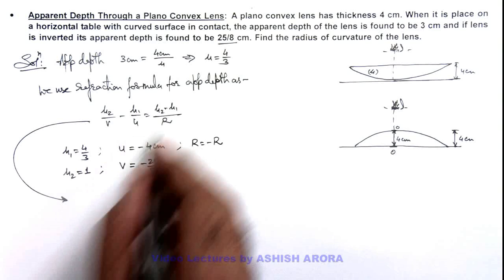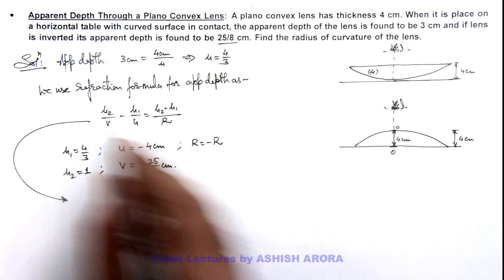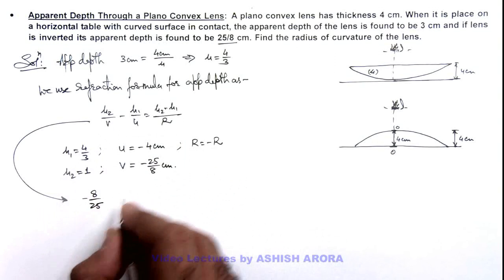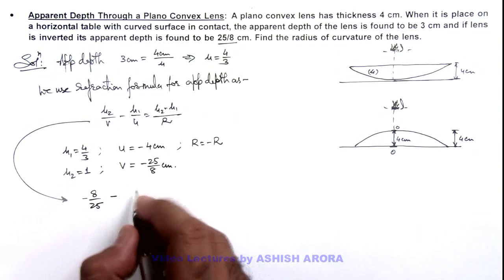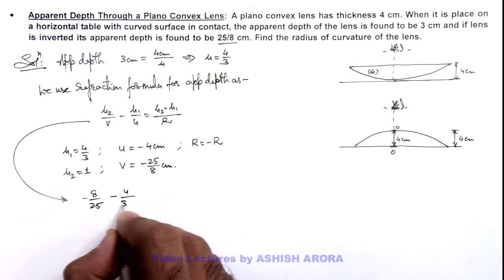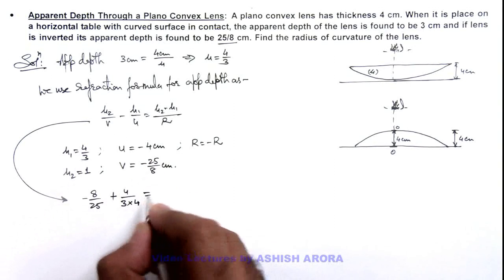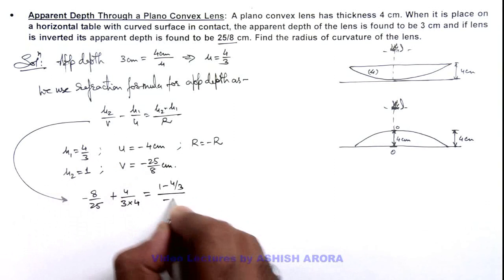On substituting the values, we can see: μ₂ is 1, v is -25/8, so this is -8/25, minus 4/3 times 1/(-4), which becomes plus 1/3, equals μ₂ - μ₁, which is 1 - 4/3, divided by -R.